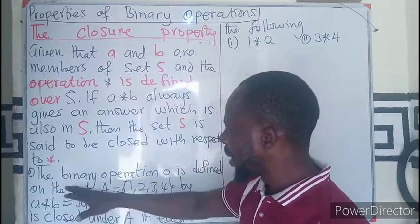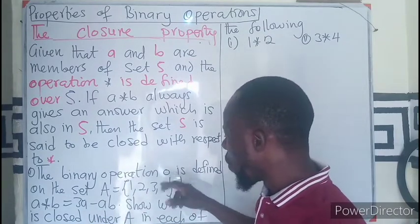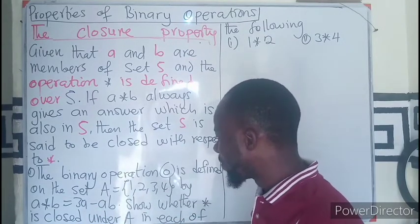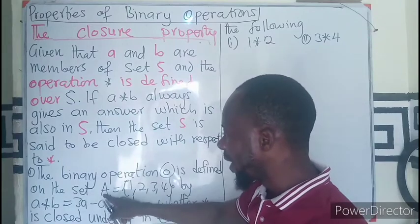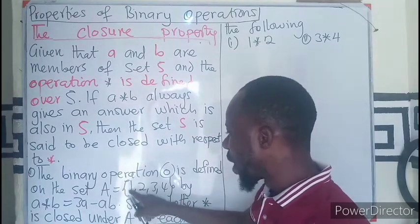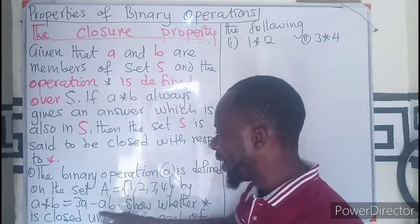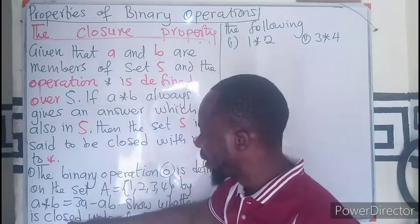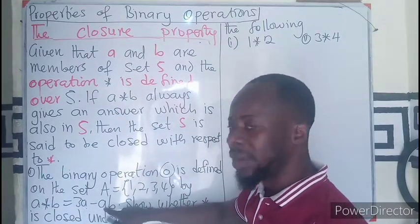The binary operation O is defined on the set A={1, 2, 3, 4} by this operation: A star B equals 3A minus AB.